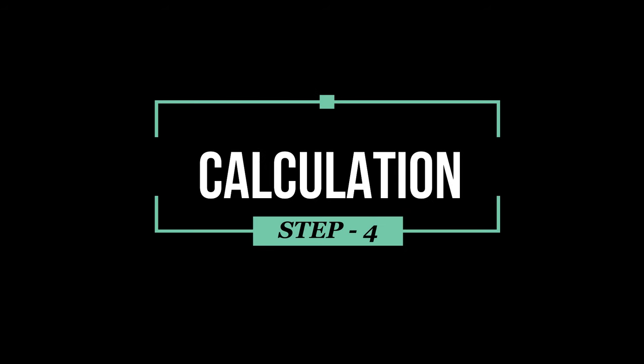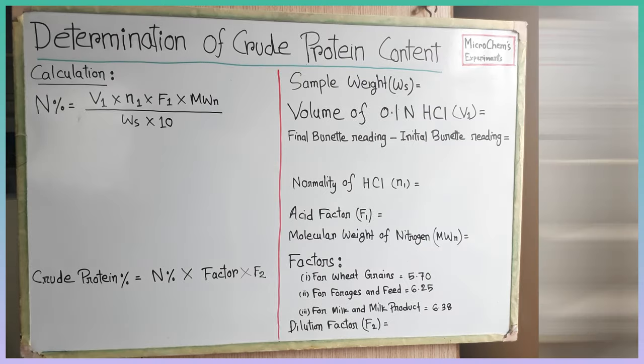Now we are going to our final step to calculate the protein content. We will arrange all the values and readings that we know from the test in the right side of the board. And we will do the calculation in the left side of the board. So let's arrange the values first.